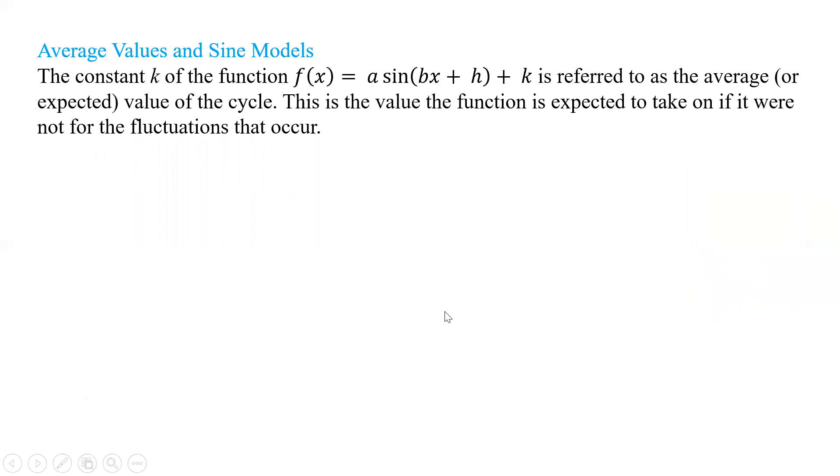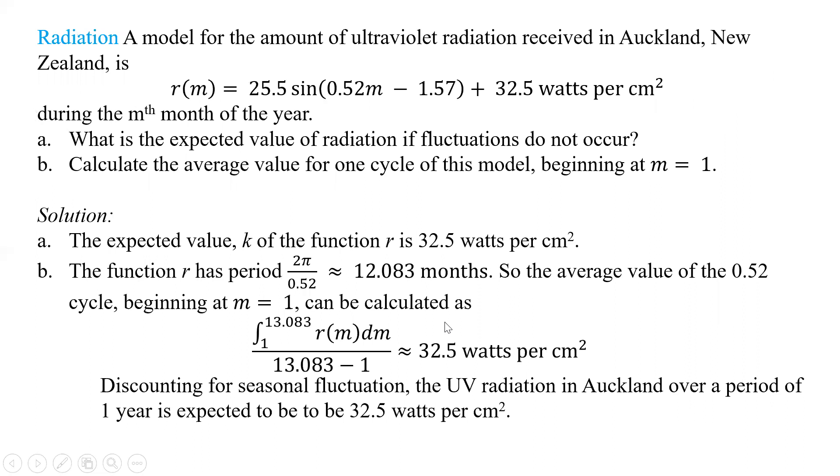What about sine models? Average values in sine models - remember, we have a, b, c, d, and the last one is a k value, that is going to be referred to as the average or the expected value of the cycle. This is the value that the function is expected to take on if it were not for fluctuations that occur. If we're given a model, here it says a model for the amount of UV radiation received in Auckland, New Zealand is given as that function, during the nth month of the year. What is the expected value of the radiation, if fluctuations do not occur? That's just that k value, so 32.5 watts per square centimeter.